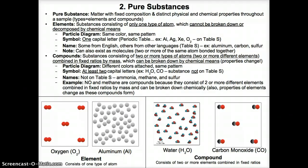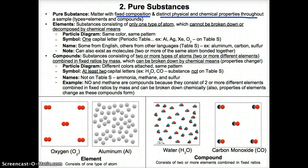So first let's discuss pure substances. Write the definition of pure substance in the lines provided. A pure substance is matter that has a fixed composition — the composition is the same when it's the same type of substance — and distinct physical and chemical properties that are uniform throughout. It has the same composition every time you encounter that substance.